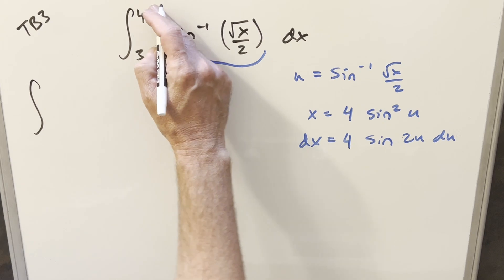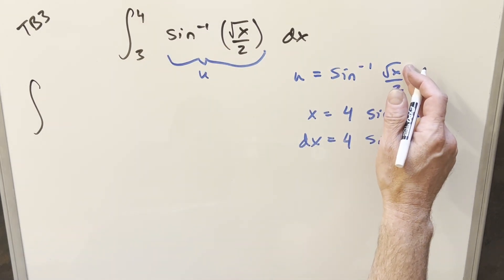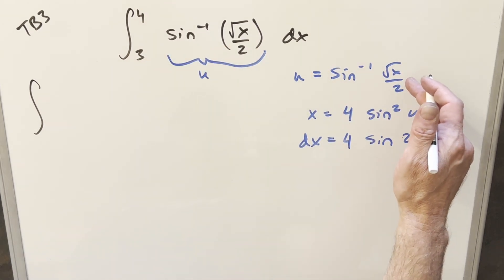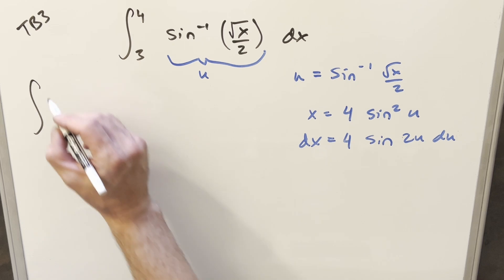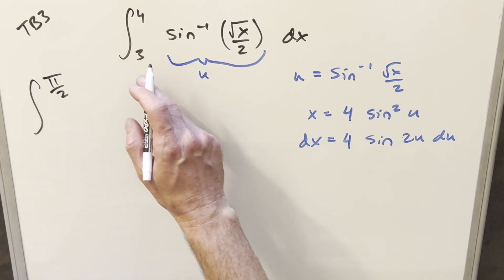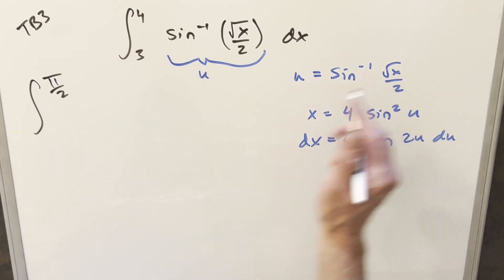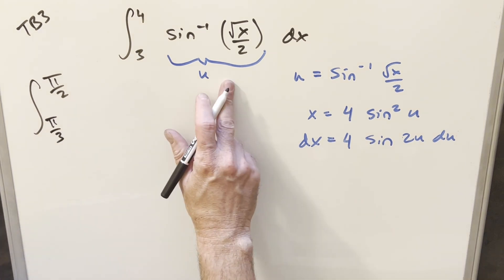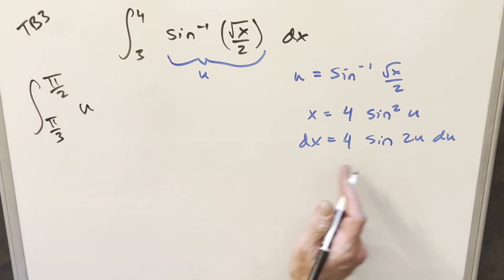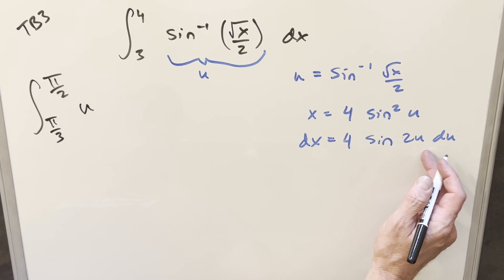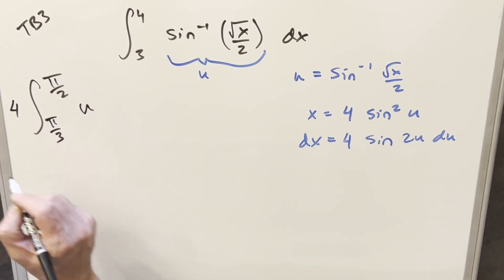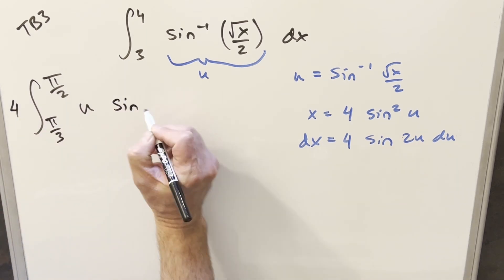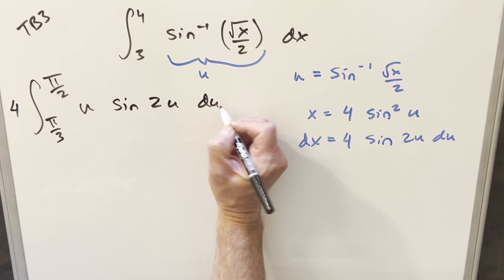So next, we'll just go ahead and substitute. First, plugging in four, square root of four is two. So arc sine of two over two, arc sine of one is just pi over two. Then plugging in three, arc sine of square root of three over two, that's going to be pi over three. Now for this part, this whole thing is just u. And our dx is going to be four sine two u du. I'll bring the four out front here. And now this is just sine two u du.